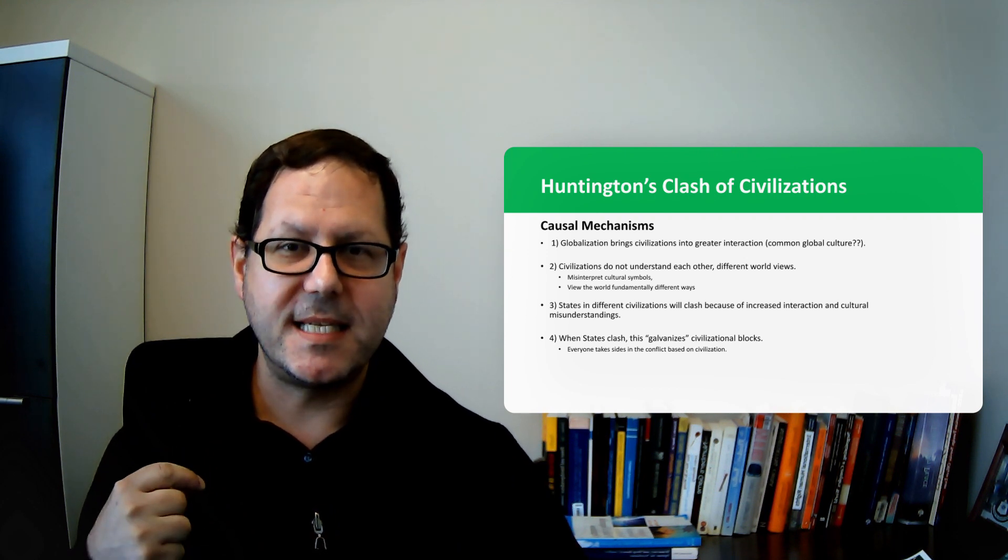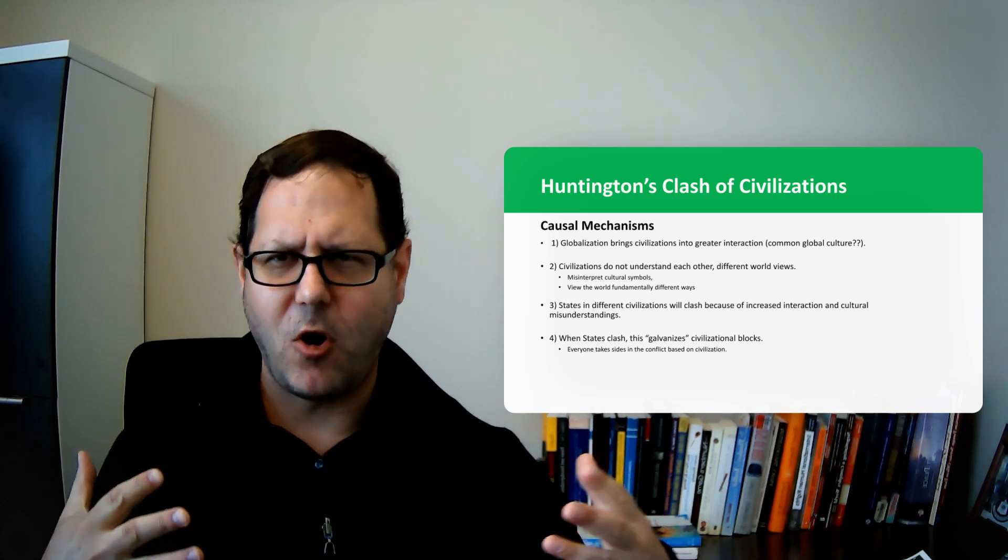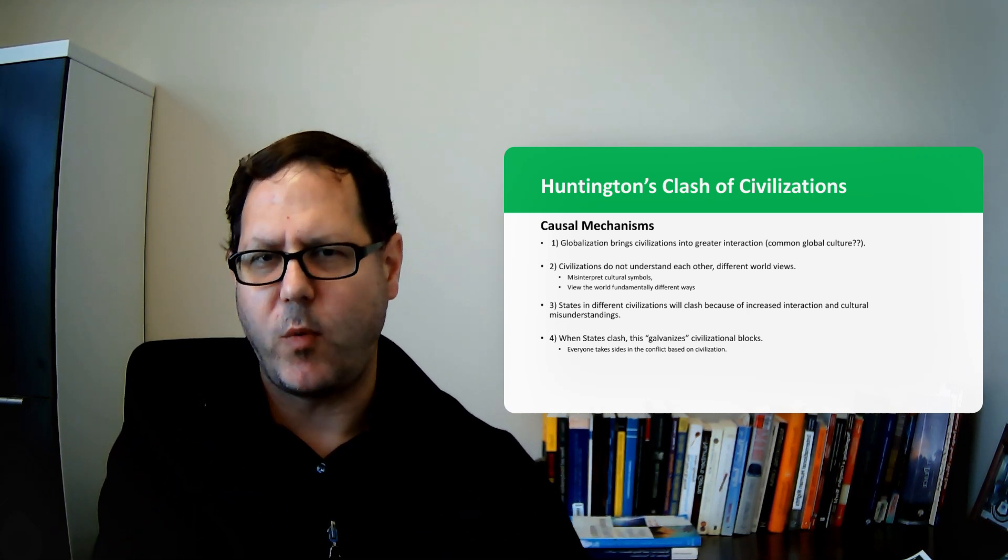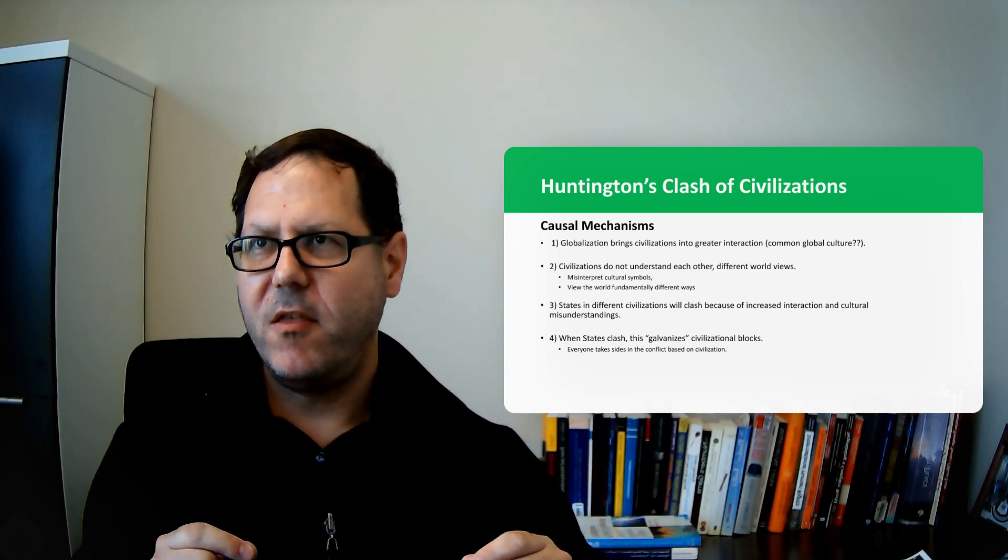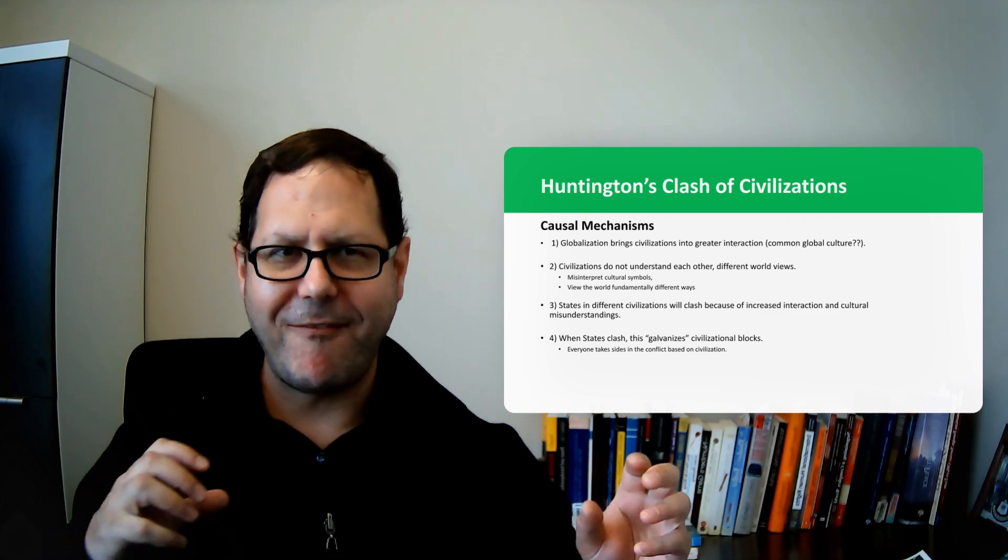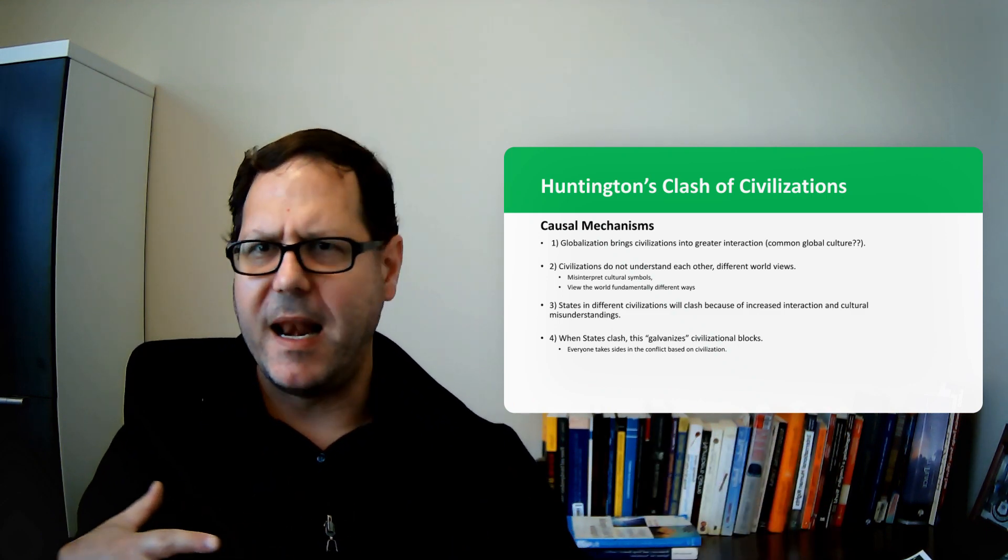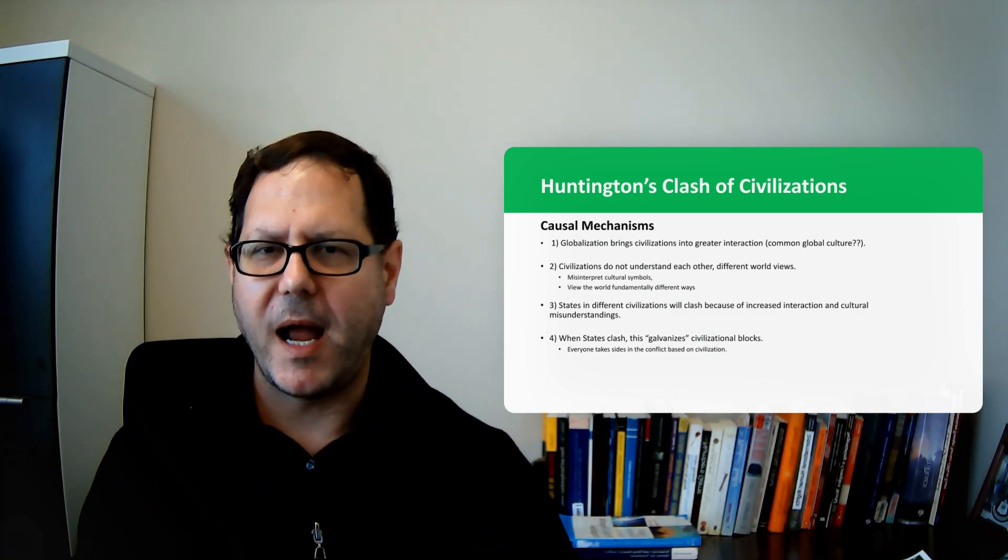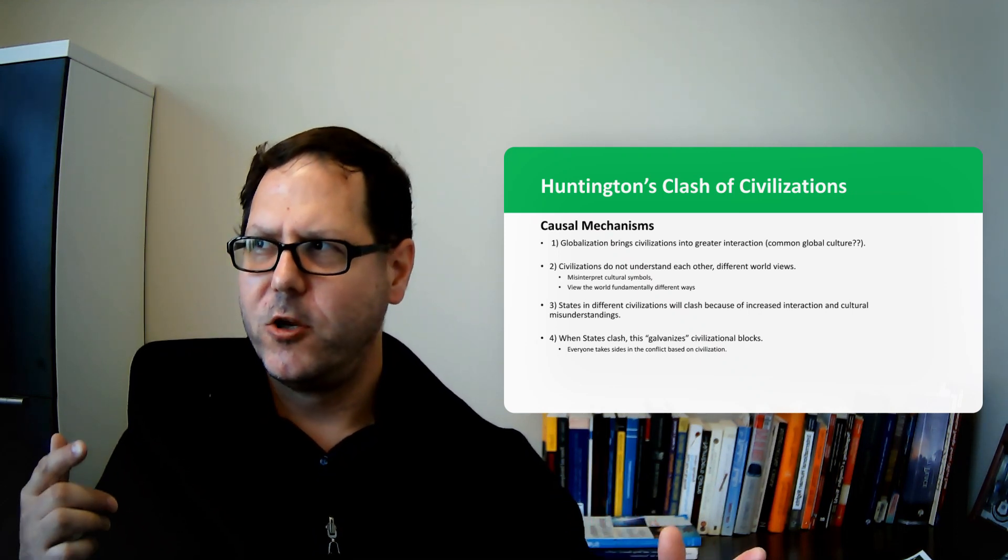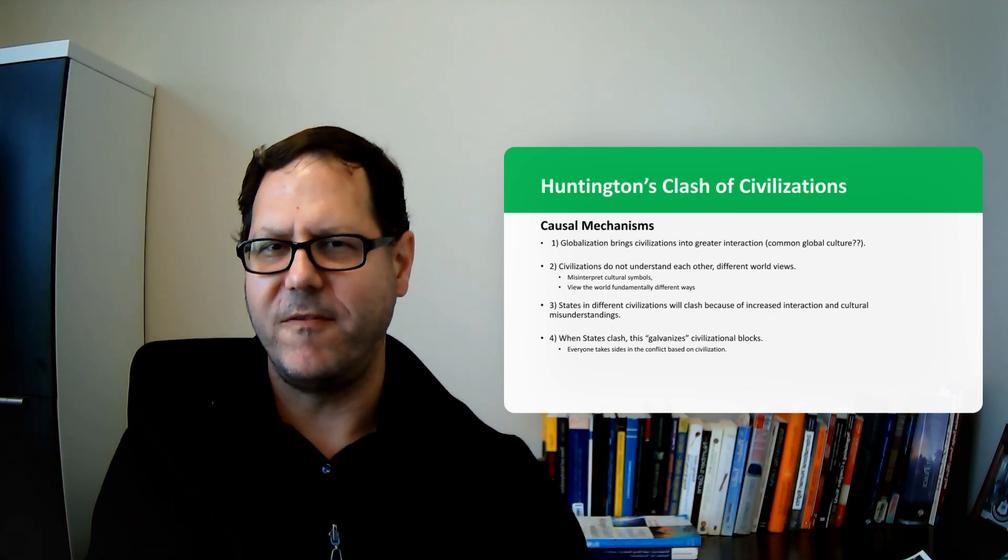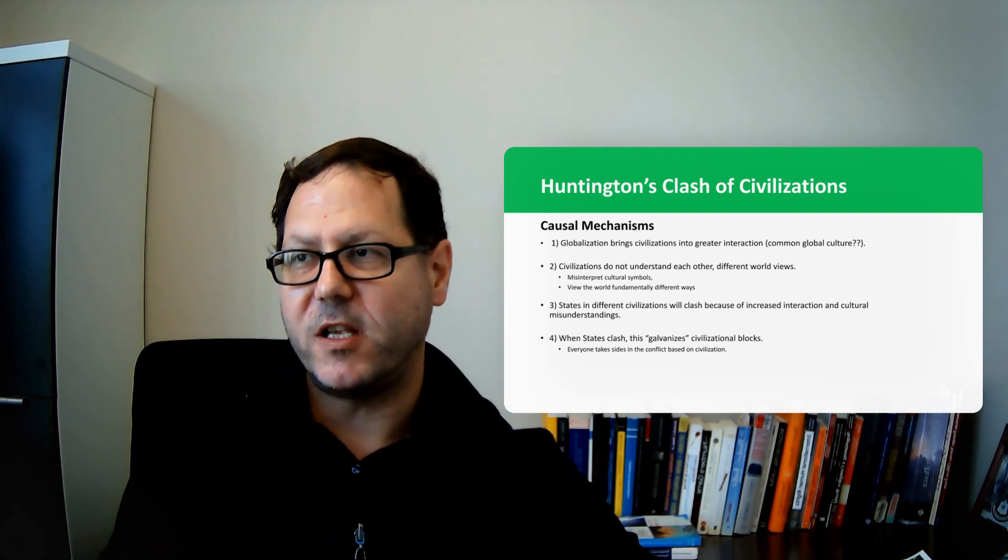Sam Huntington says that when states find themselves in these miscommunication cultural annoyance kind of situations, these clashings between civilizations are going to galvanize civilizational blocks. Essentially everybody from Western civilization lines up behind the country that's involved in this conflict and everybody from the Islamic world lines up behind countries in the other block and you now have a clashing not of two leaders who have annoyed each other or two countries that have misunderstood each other but a clash of civilizational blocks. That's clash of civilizations.